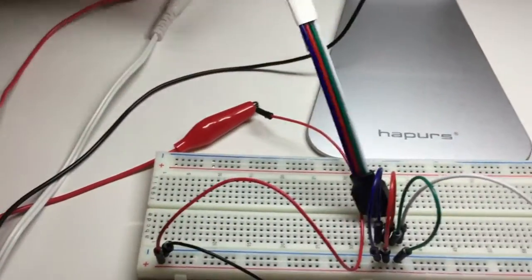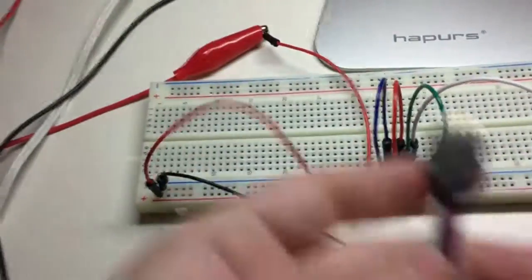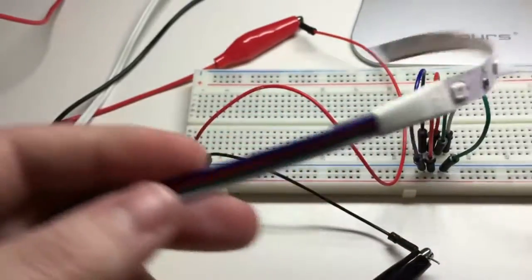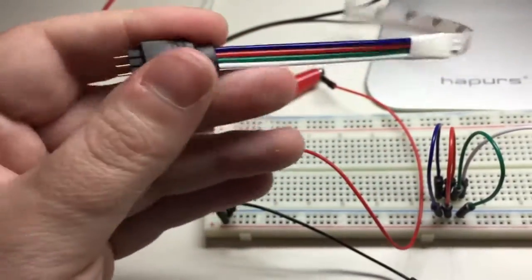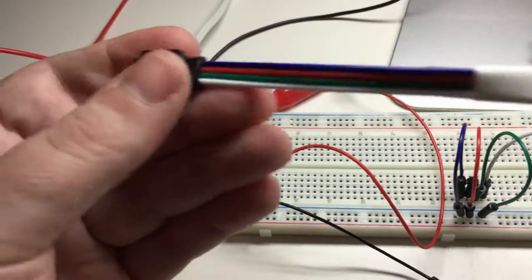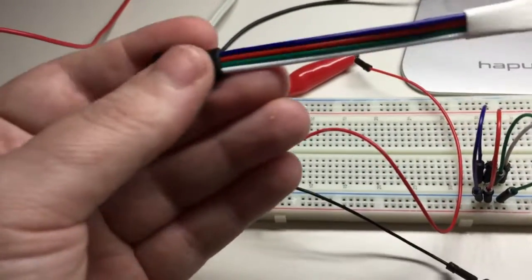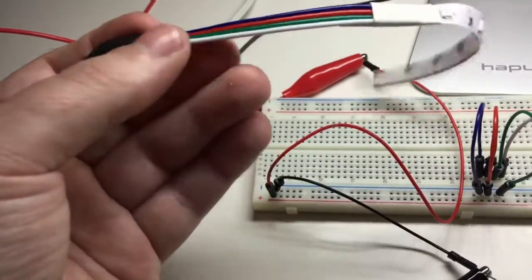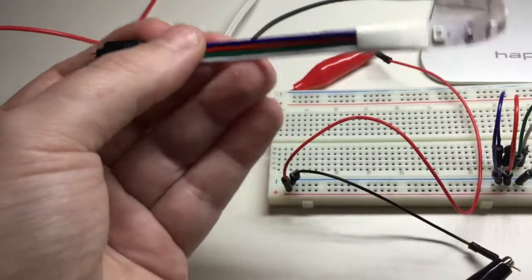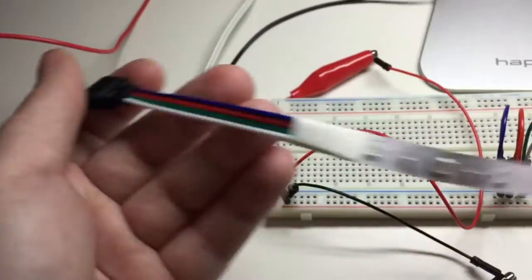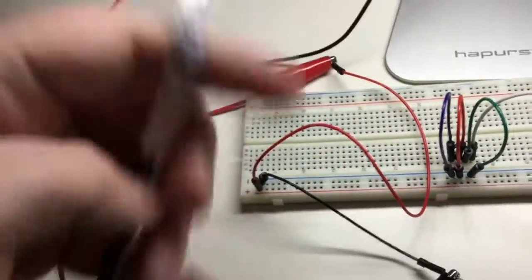Alright, so here we have the RGB strip. It's pretty standard for those who haven't seen these RGB light strips before. You have white which is the positive 12 voltage and then it's common anode, so you have a green cathode, red cathode, and blue cathode and the colors match up. So all well and good.